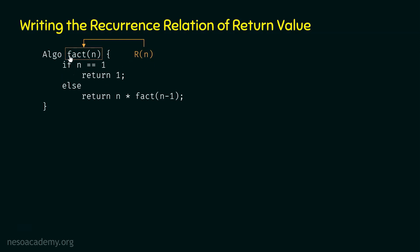Now, what about this base case? We know this base case is satisfied when n is equal to 1, meaning we are considering fact of 1. The return value of fact of 1 must be R(1). If n is equal to 1, then 1 will be returned from the function, so the return value must be equal to 1. Hence, R(1) must be equal to 1. We need to write the exact return value here — we are interested in writing the recurrence relation of return value.